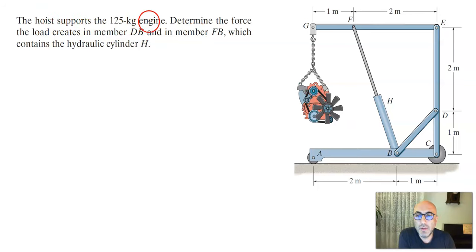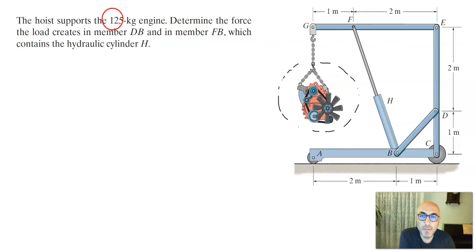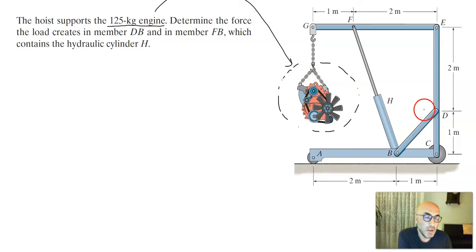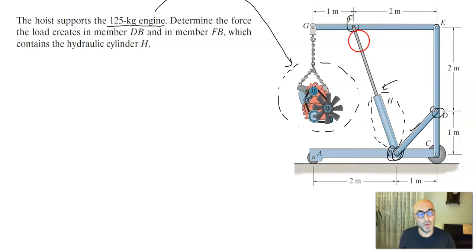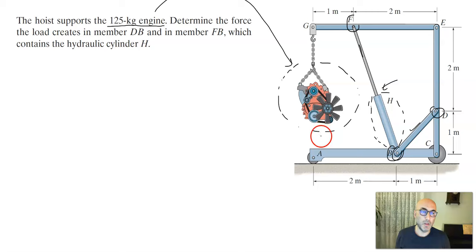The hoist supports a 125 kilogram engine. We need to determine the force that this engine load creates in member DB and in member FB, which contains the hydraulic cylinder H. So we want to find the force applied along member FB and along member DB.